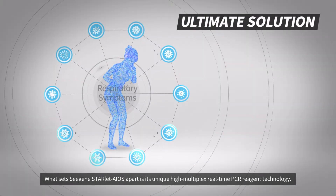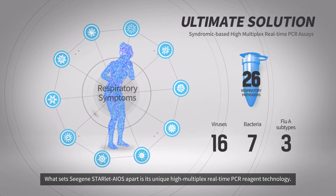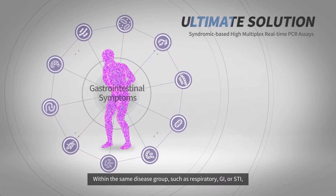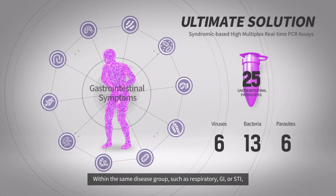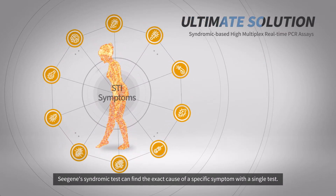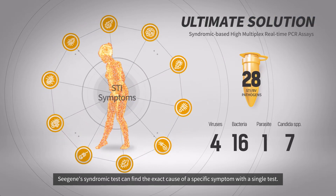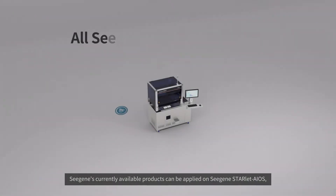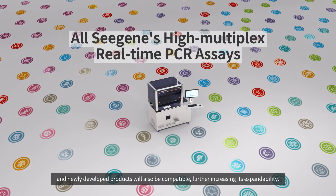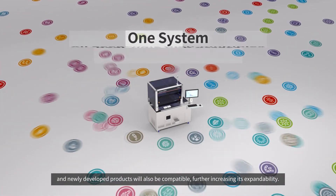What sets C-Gene Starlit Aeos apart is its unique high multiplex real-time PCR reagent technology. Within the same disease group such as respiratory, GI, or STI, C-Gene's syndromic test can find the exact cause of a specific symptom with a single test. C-Gene's currently available products can be applied on C-Gene Starlit Aeos, and newly developed products will also be compatible, further increasing expandability.